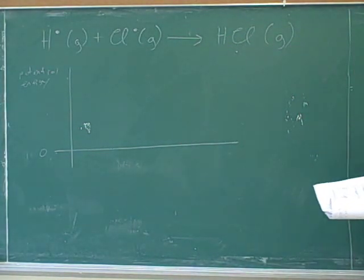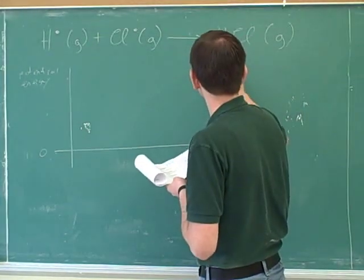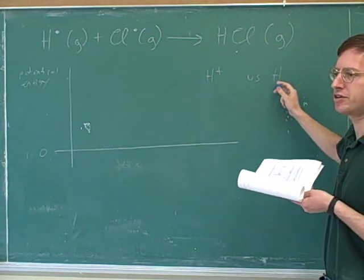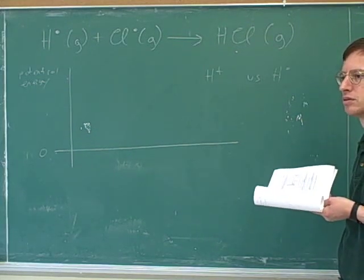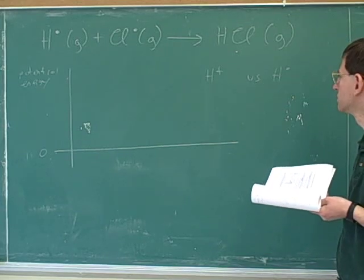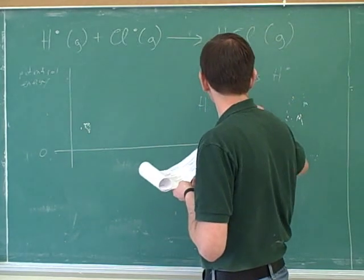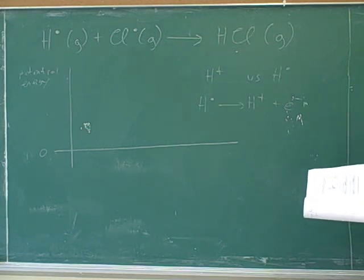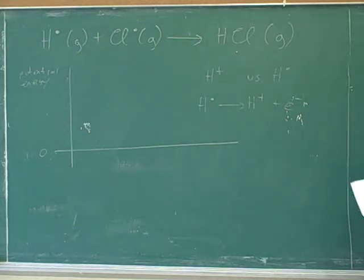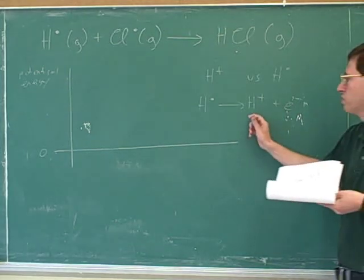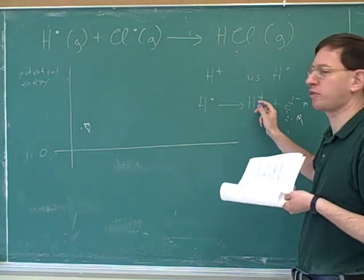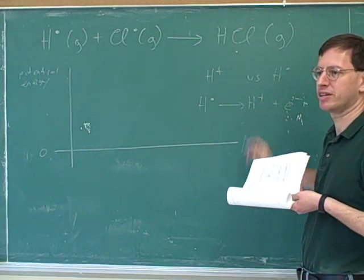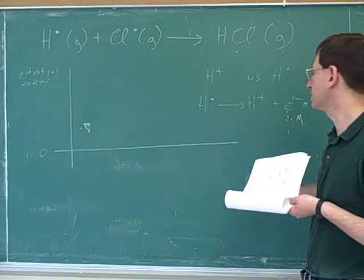What about H⁺ versus H - which one is more stable? In the equation it would be H goes to H⁺ plus an electron. Would H be more stable because that's how it is naturally, or would H⁺ be more stable because it's satisfied the octet rule? Well, does nature like or dislike charges? It dislikes charges. So this H⁺ would be less happy, higher energy, less stable, because we've created a charge. And in particular, we've separated charges.